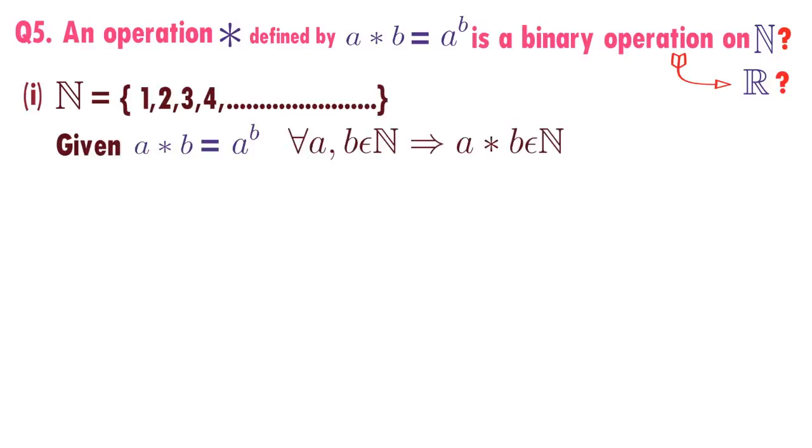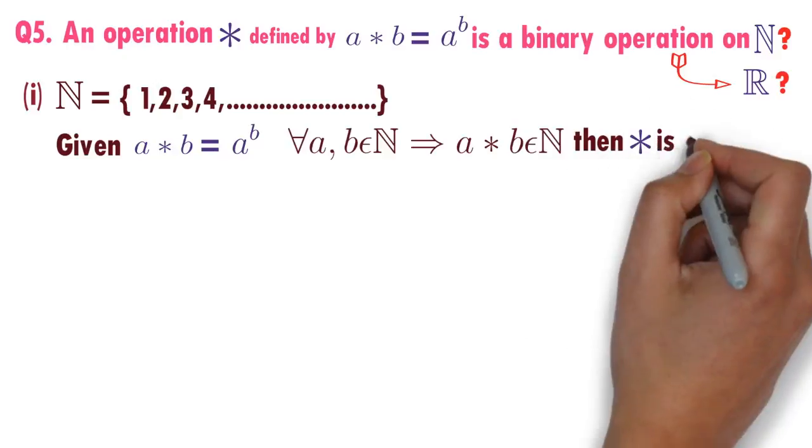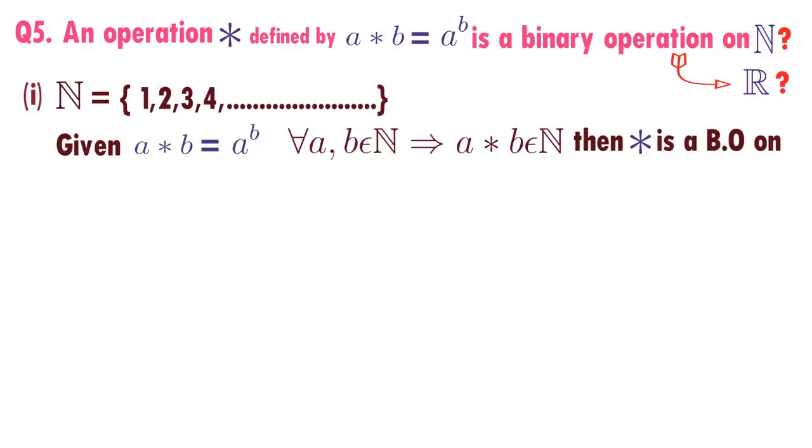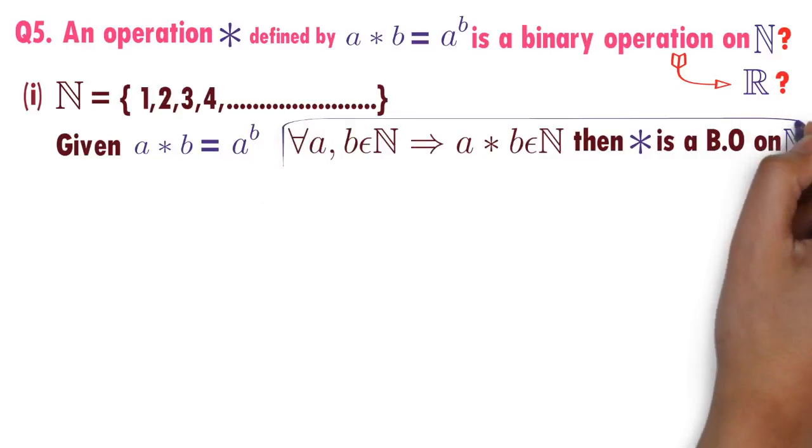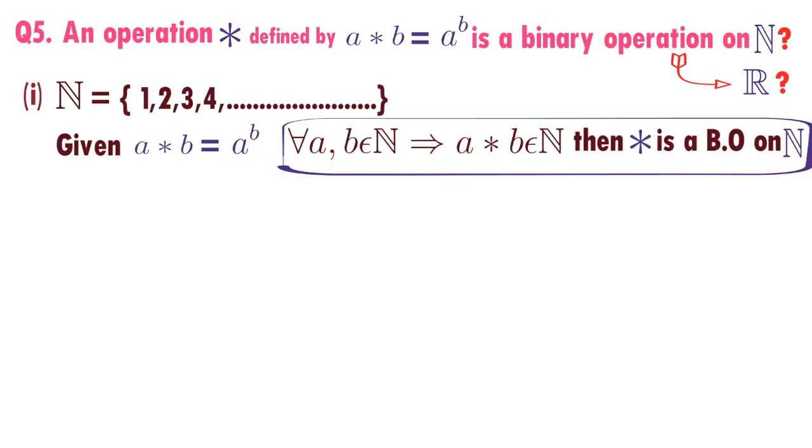For every A, B belongs to N implies A star B belongs to N, then star is a binary operation on natural numbers. As we have done so many questions till now, this is the condition we always check every time. If this condition is satisfied, then we say star is a function from N cross N to N.